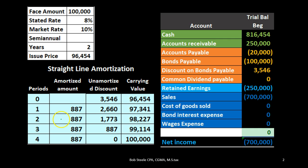A straight-line method would just have an even amount written off. It's not as exact as using the effective method, which takes the carrying amount and applies interest based on it. Looking at the straight-line table: the unamortized discount starts at $3,546, which is $100,000 minus $96,454, giving us a carrying amount of $96,454. We take the $3,546 and divide it by four periods, giving us $887 per period.